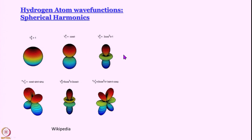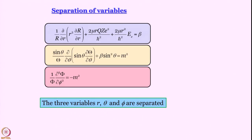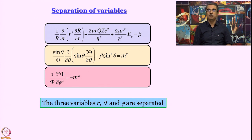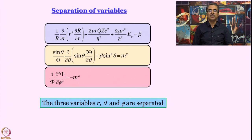Spherical harmonics means the solution of the angular part of the Schrödinger equation. We could separate the Schrödinger equation for the hydrogen atom into three different equations: one in terms of the radial part, the second in terms of theta, and the third in terms of phi. If you are rusty on what r, theta, and phi are, please go back to the lecture before last, where we discussed spherical polar coordinates. The equations in the three variables r, theta, and phi are now separated, and the last one is simple — let us solve that.